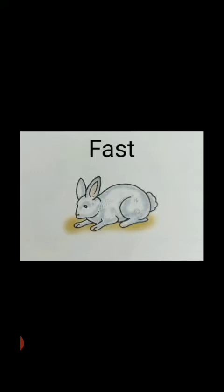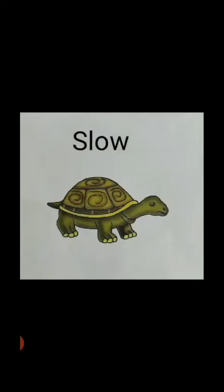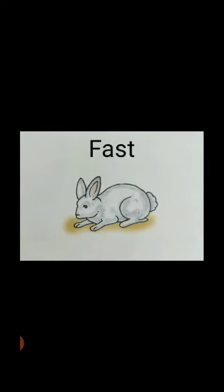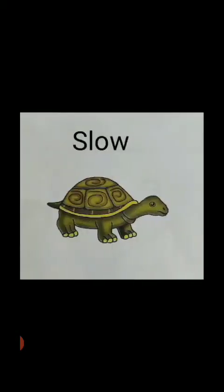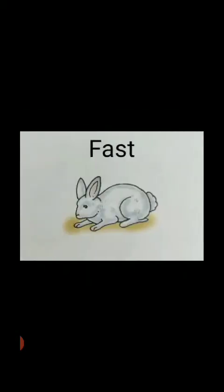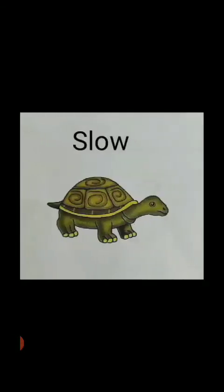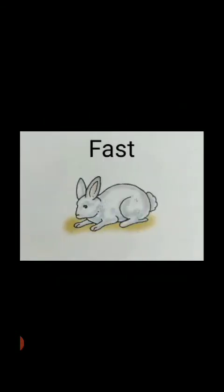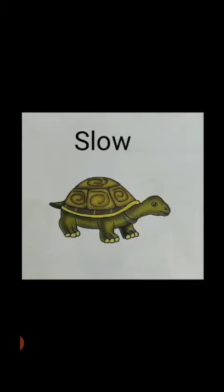This is a rabbit and we know that rabbit runs very fast — F-A-S-T, fast. Next is a tortoise and tortoise runs very slow — S-L-O-W, slow. So opposite of fast will be slow, and opposite of slow will be fast.